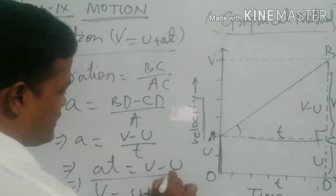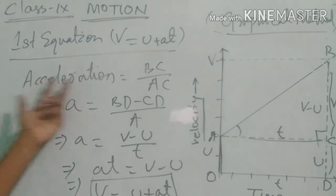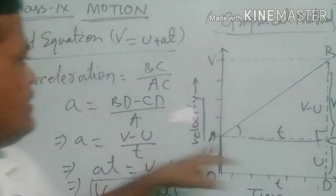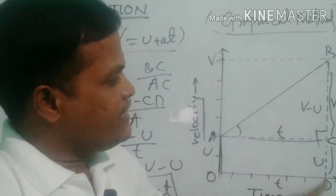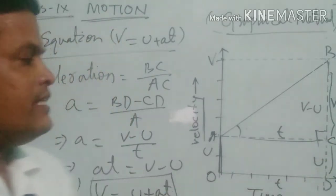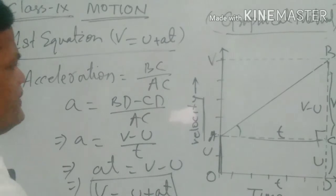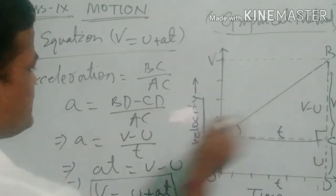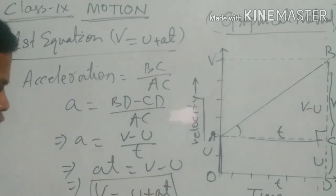This is the first equation of motion. To recap: acceleration is calculated as BC / AC, where BC = BD - CD = v - u, and AC = t. So A = (v - u) / t, giving us v = u + AT. This confirms the first equation of motion.